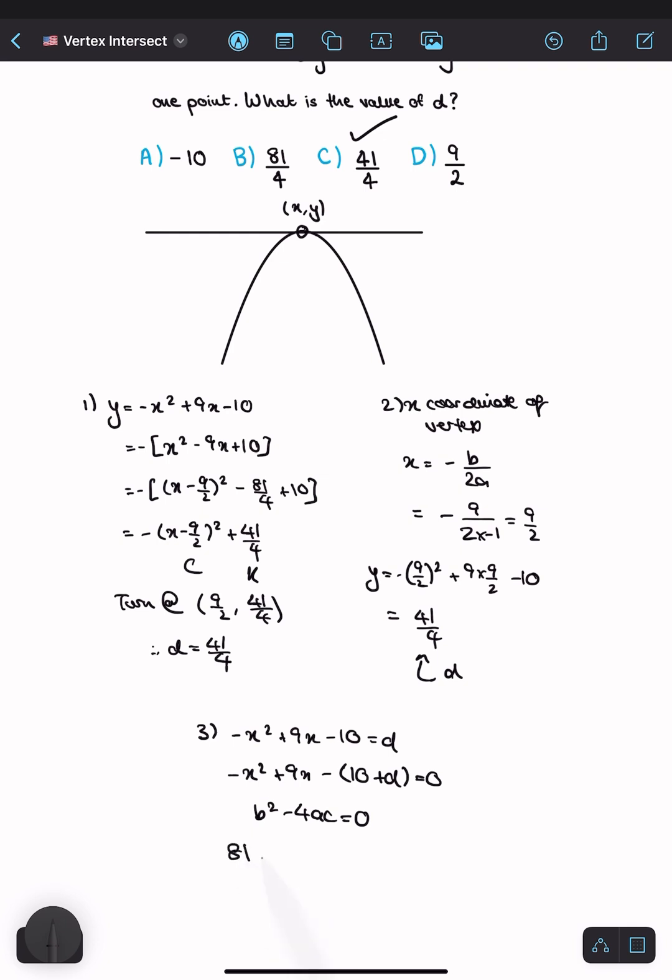Substituting in, we get 81 - 4(-1)(-10 - d) = 0. Expanding gives 81 - 4(10 + d) = 0, so 41 - 4d = 0, and therefore d = 41/4.